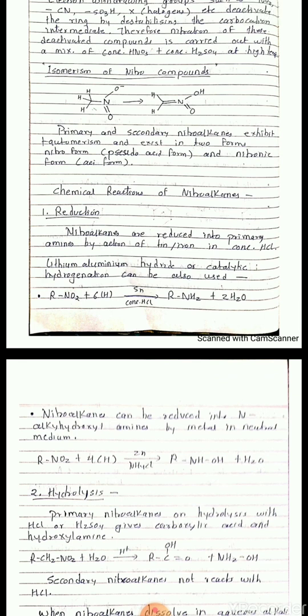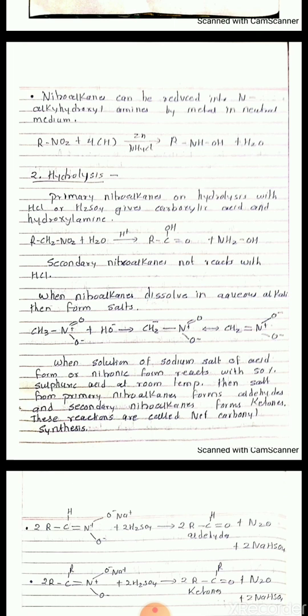Chemical reactions of nitroalkanes. First, reduction: nitroalkanes are reduced to primary amines by the action of tin or iron in combination with concentrated HCl, or by lithium aluminium hydride or catalytic hydrogenation. For example, RNO2 reduced with 6H in the presence of tin and concentrated HCl gives amine RNH2 and water as a sub-product. Nitroalkanes can also be reduced to N-alkyl hydroxylamines by metal in neutral medium; for example, RNO2 plus 4H in the presence of zinc and ammonium chloride gives R-NHOH (hydroxylamine) plus water.